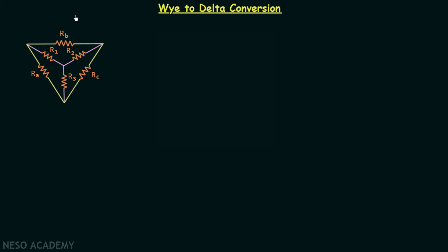In the last lecture we performed the conversion of delta network to Y network, and now in this lecture we want to perform the conversion of Y network to delta network. This means we have the Y network and therefore we know r1, r2, and r3, and now we want to transform this Y network to the delta network — that is, we want to obtain ra, rb, and rc in terms of r1, r2, and r3. I will first give you the formulas and then we will derive them.